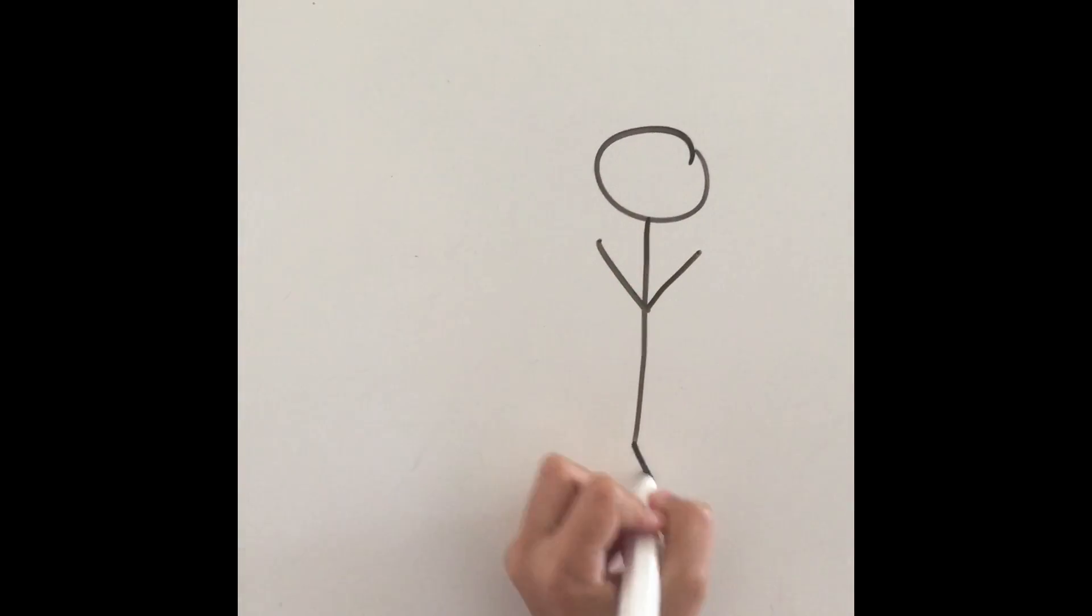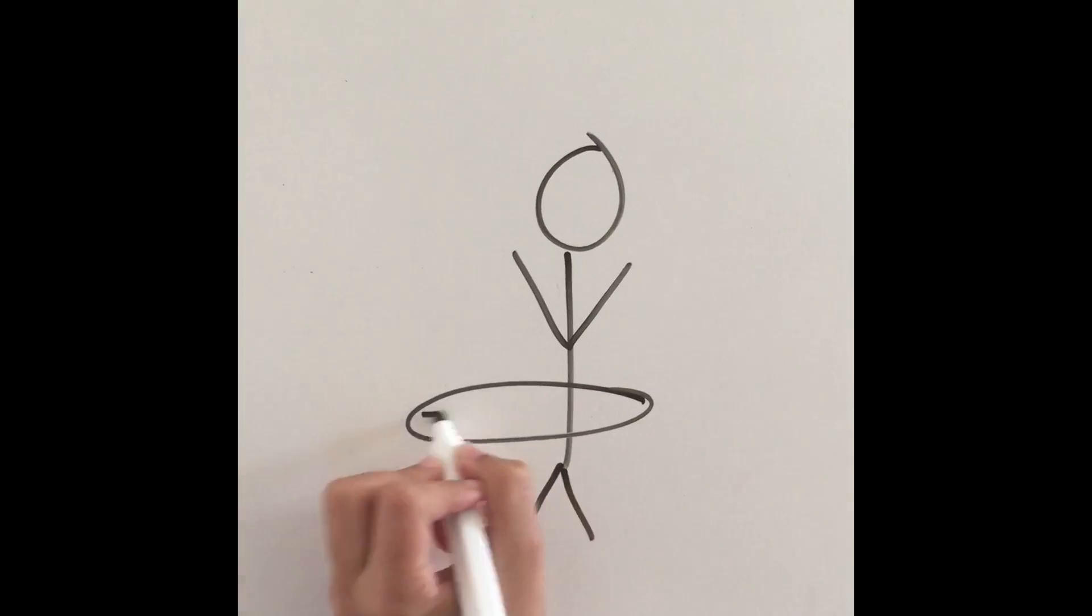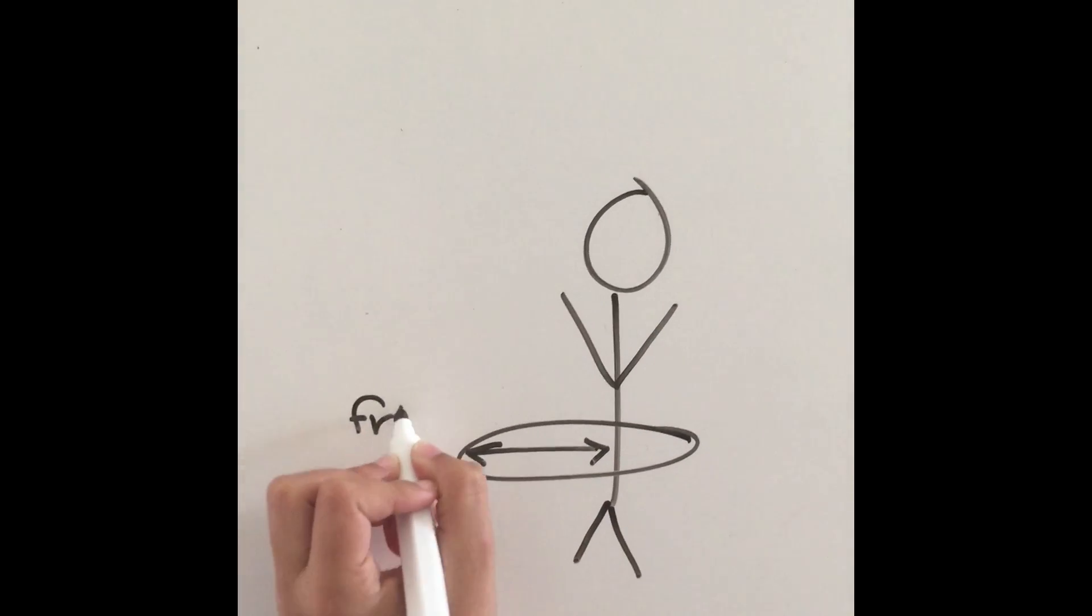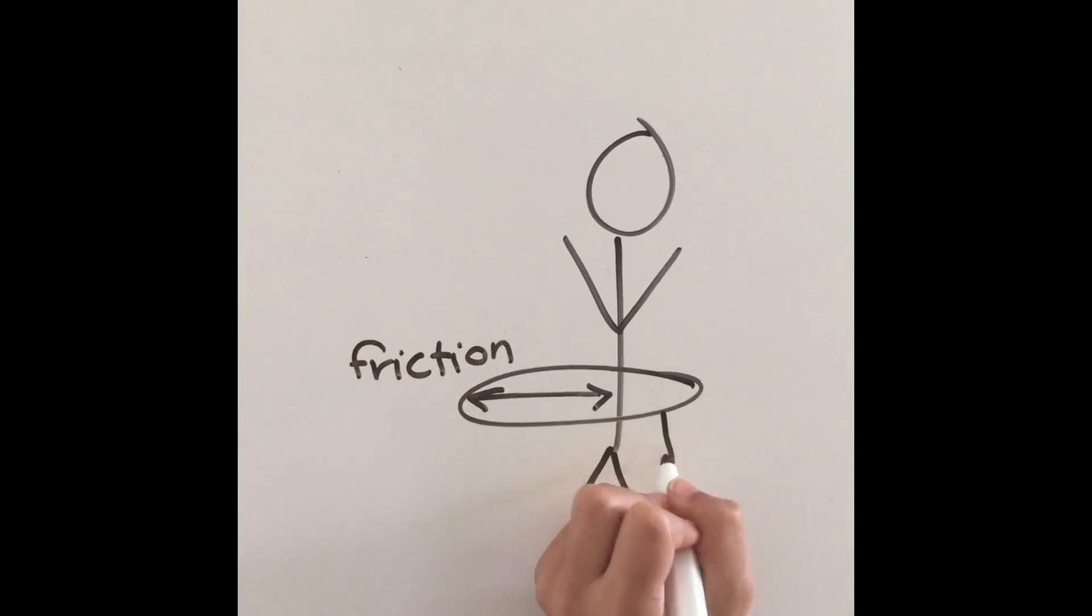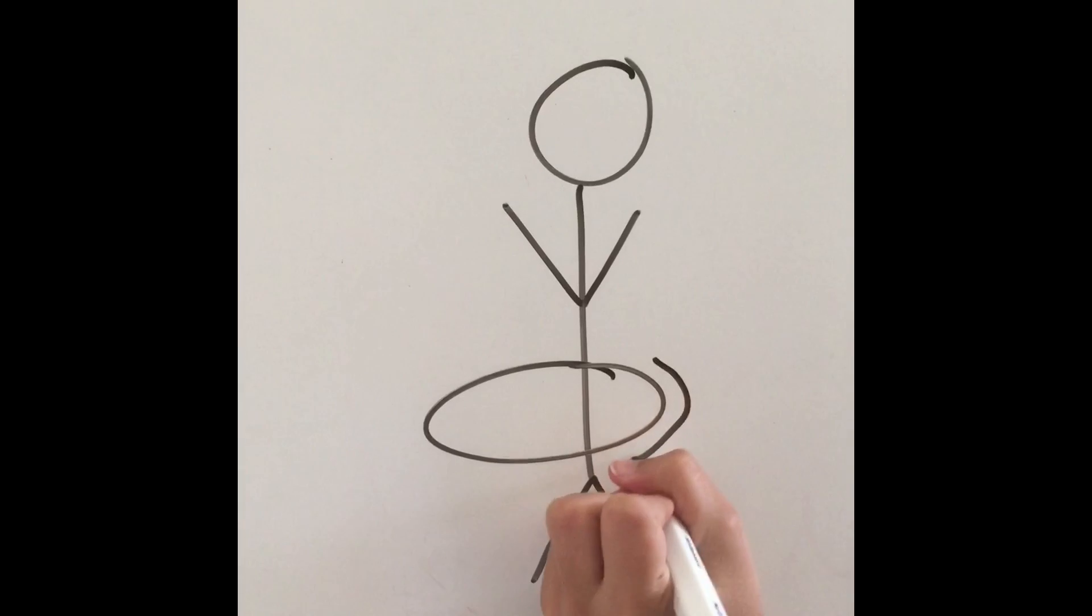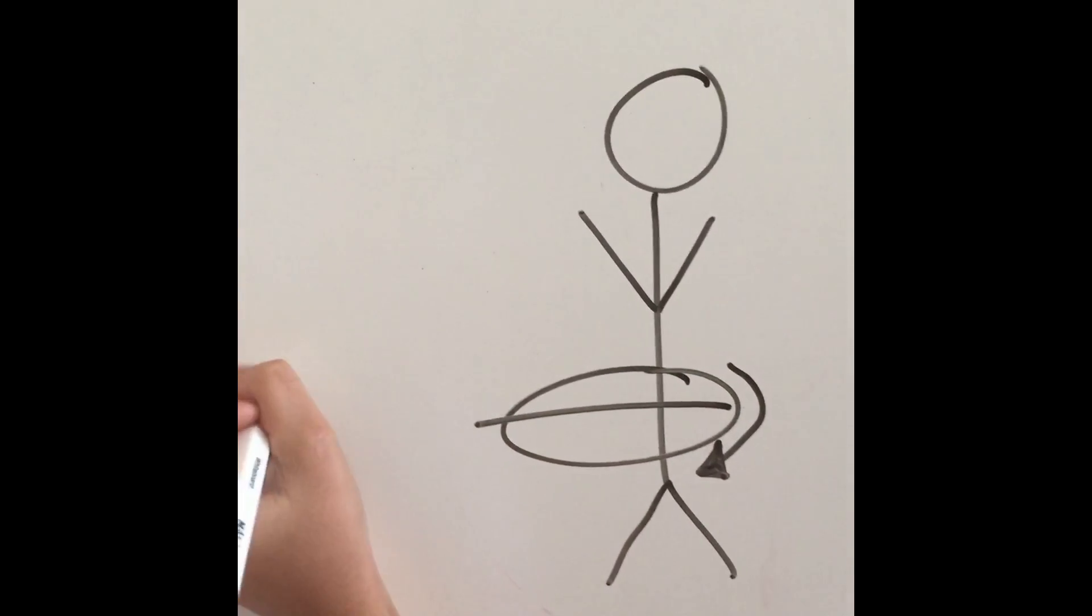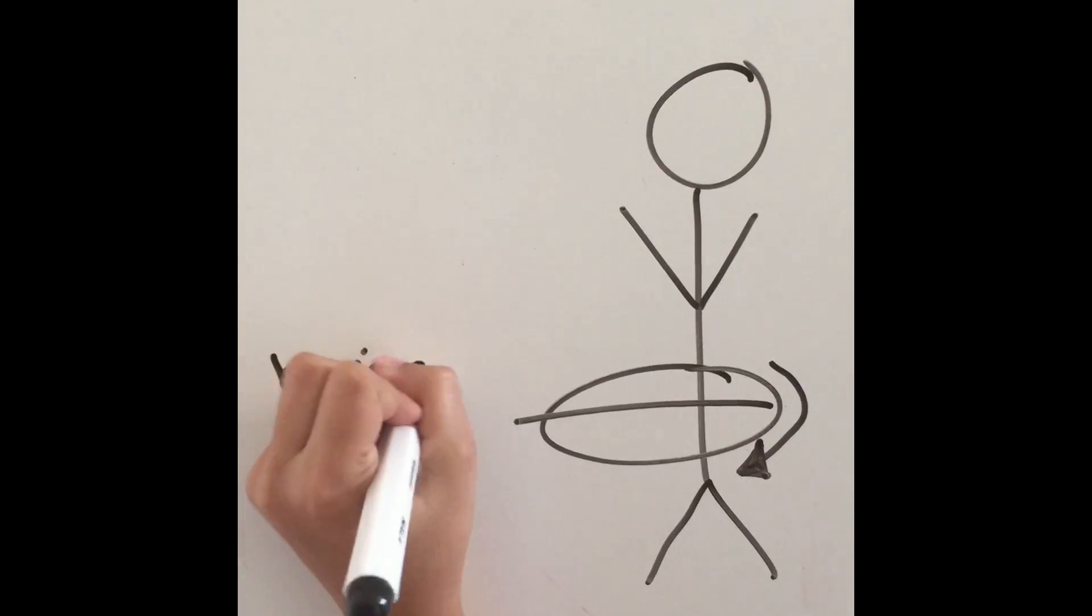To get started, just toss the hoop around your waist. This is imparting energy through physical action. Friction against your body and air slows it down, and gravity tries to bring it down. To keep it up, you have to apply force to the inside of the hoop. You must provide enough outward force to overcome gravity and keep the hoop horizontal.